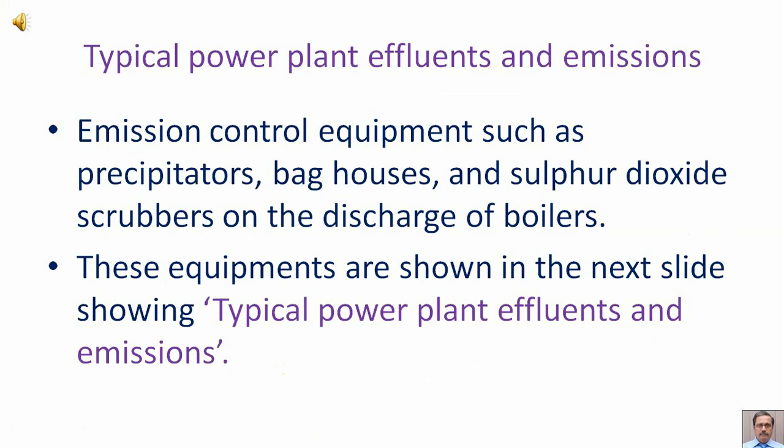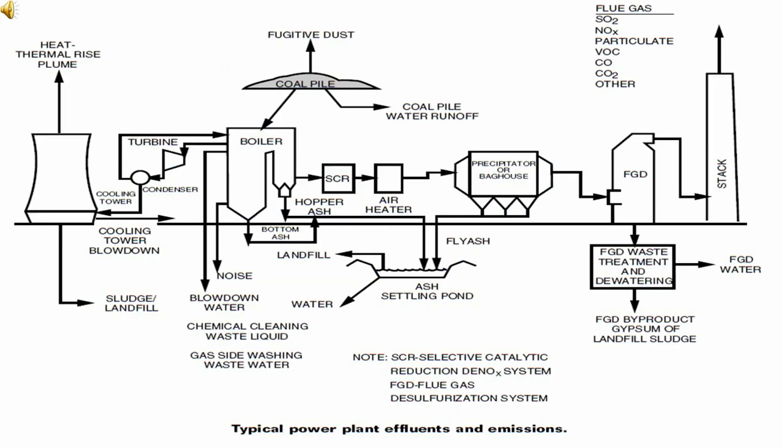Typical power plant effluents and emissions include emission control equipment such as precipitators, bag houses, and sulfur dioxide scrubbers on the discharge of boilers. These equipments are shown in the next slide illustrating typical power plant effluents and emissions.